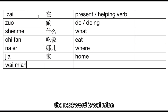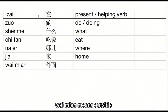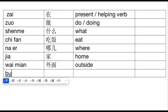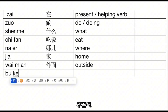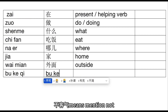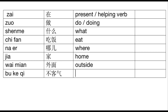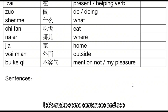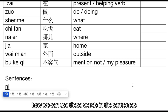The next word is 外面 (wàimiàn), which means 'outside'. And 不客气 (bù kèqi) means 'you're welcome'. Now let's make some sentences and see how we can use these words.